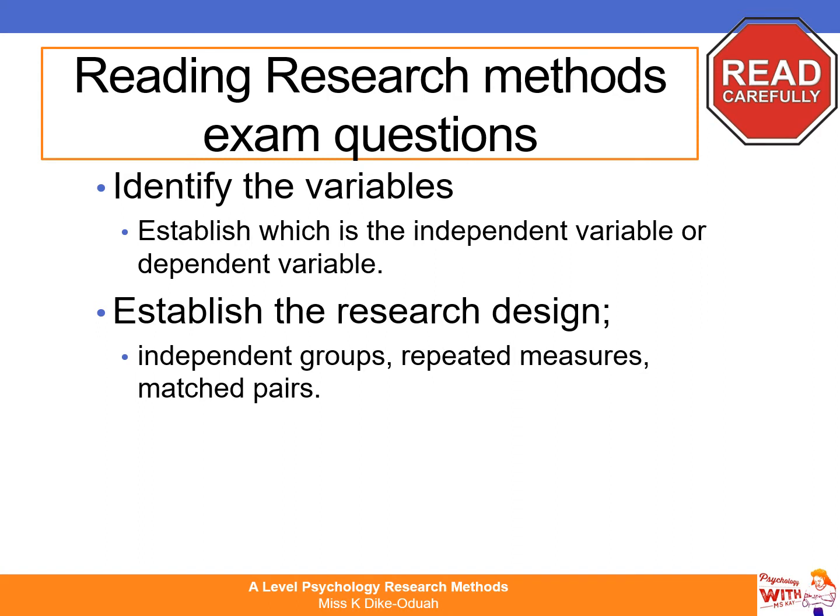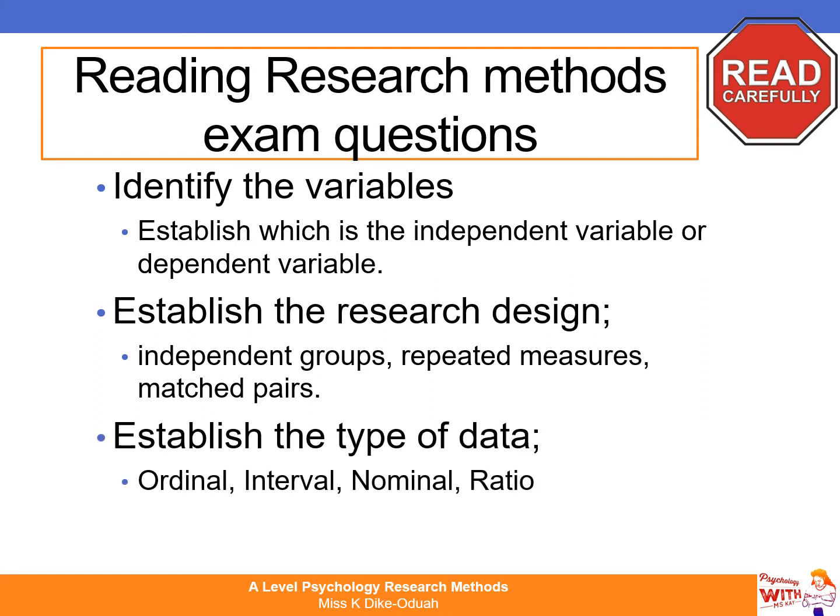Establish the type of data: is it ordinal, interval, or nominal — our main three. Ratio is another type of data that has a true zero, for example weight — you can't be minus five kg, you start from zero upwards. But our main three that we focus on for statistical tests are ordinal, interval, and nominal. Ordinal data is data that you can put in order. Interval data is the most powerful — each data point has a set, predetermined interval between each one. Nominal data is categorical data.